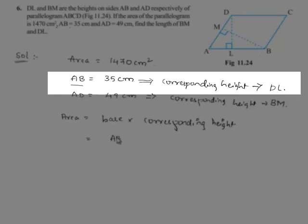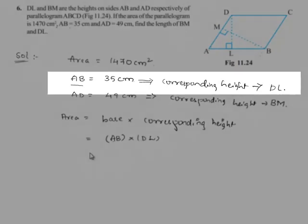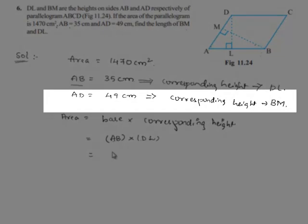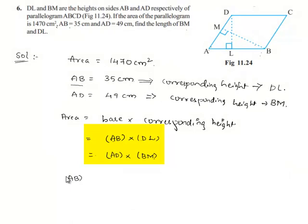For the first case, assume the base is AB, then its corresponding height is DL. If we assume the base as AD, then its corresponding height is BM. On equating both expressions, we get AB × DL = AD × BM = area of the parallelogram.